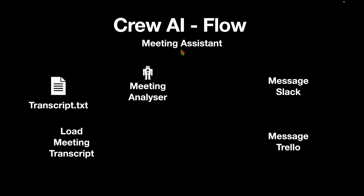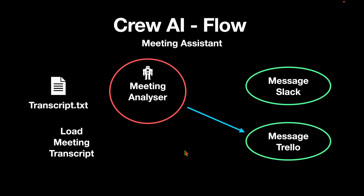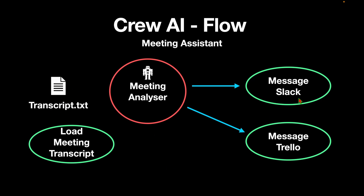To give a specific example, let's develop a meeting assistant in this video. The meeting assistant will use a crew which is a meeting analyzer, and it will be sending messages to an app like Trello. On top of that it will also be sending messages to Slack. The meeting analyzer crew also sends messages to Slack and it receives inputs from a task like loading a meeting script, which is the transcript of the meeting or the output of the meeting in text format. We will implement this project end-to-end and see how we can use flow to ease our life.